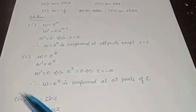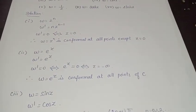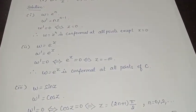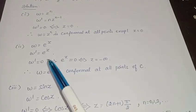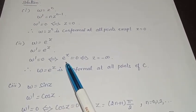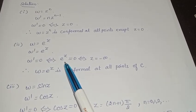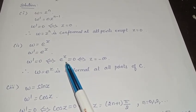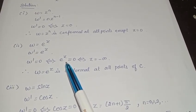The second function is w = eᶻ. The derivative w'(z) is eᶻ itself. Now, eᶻ is a non-vanishing function — it equals 0 only at minus infinity. So for this function, there is no finite critical point, and the function is conformal everywhere in the finite z-plane.